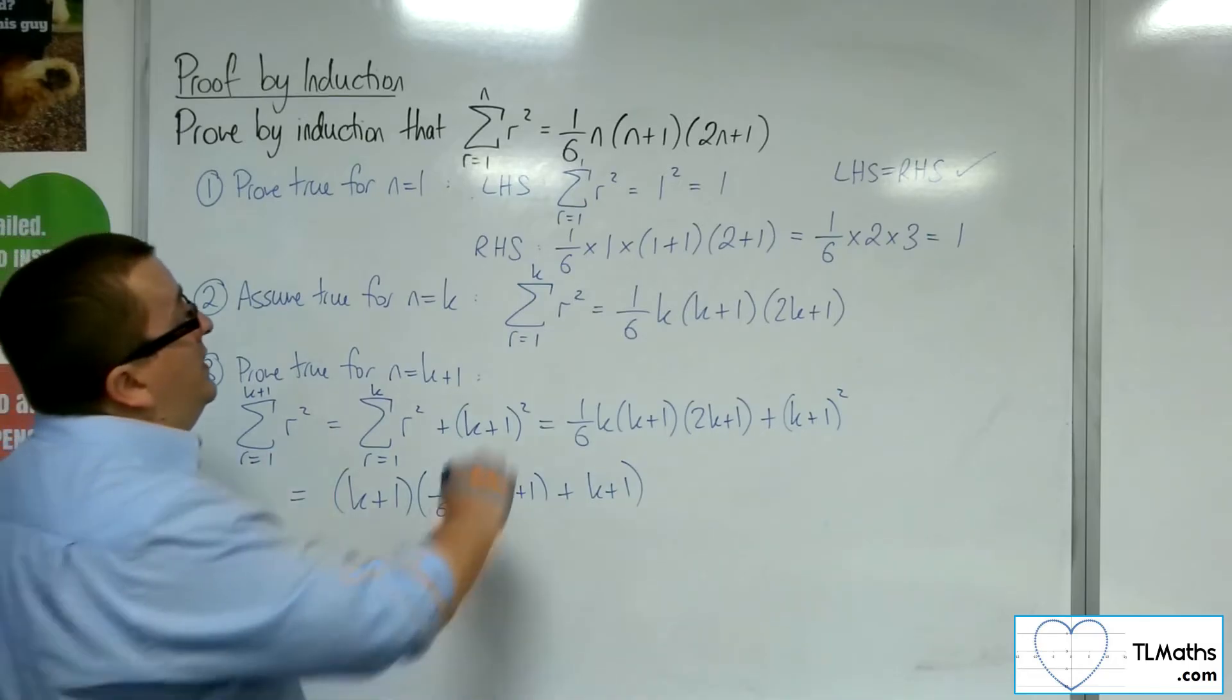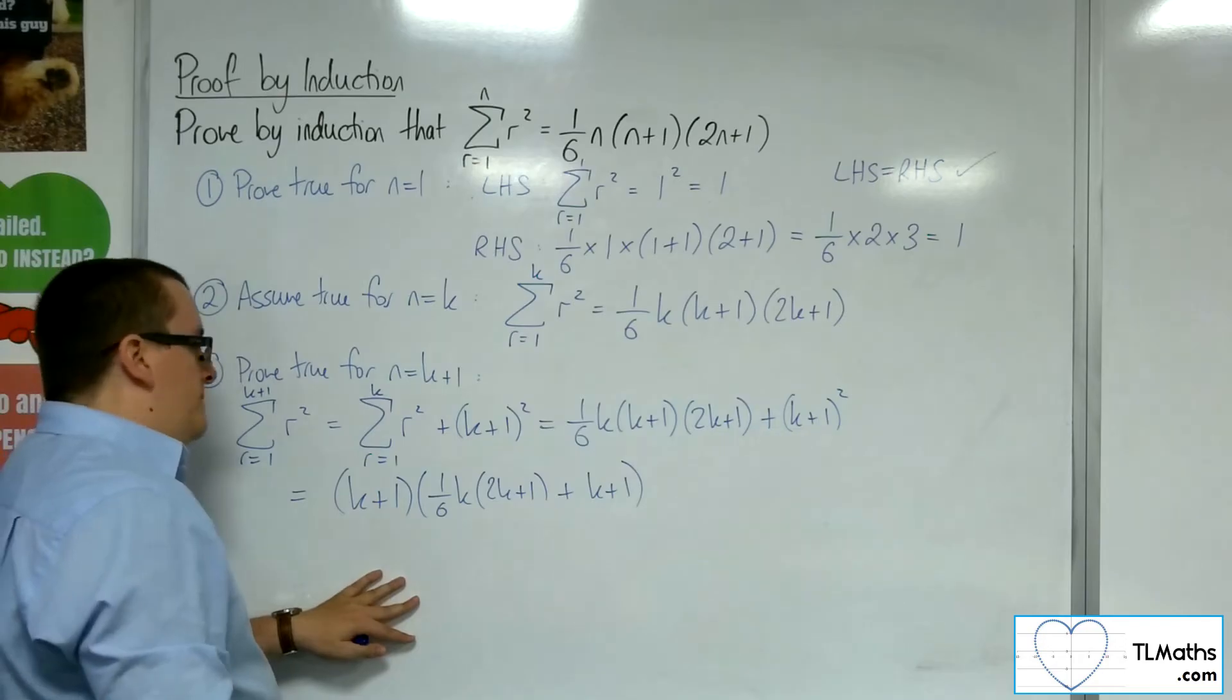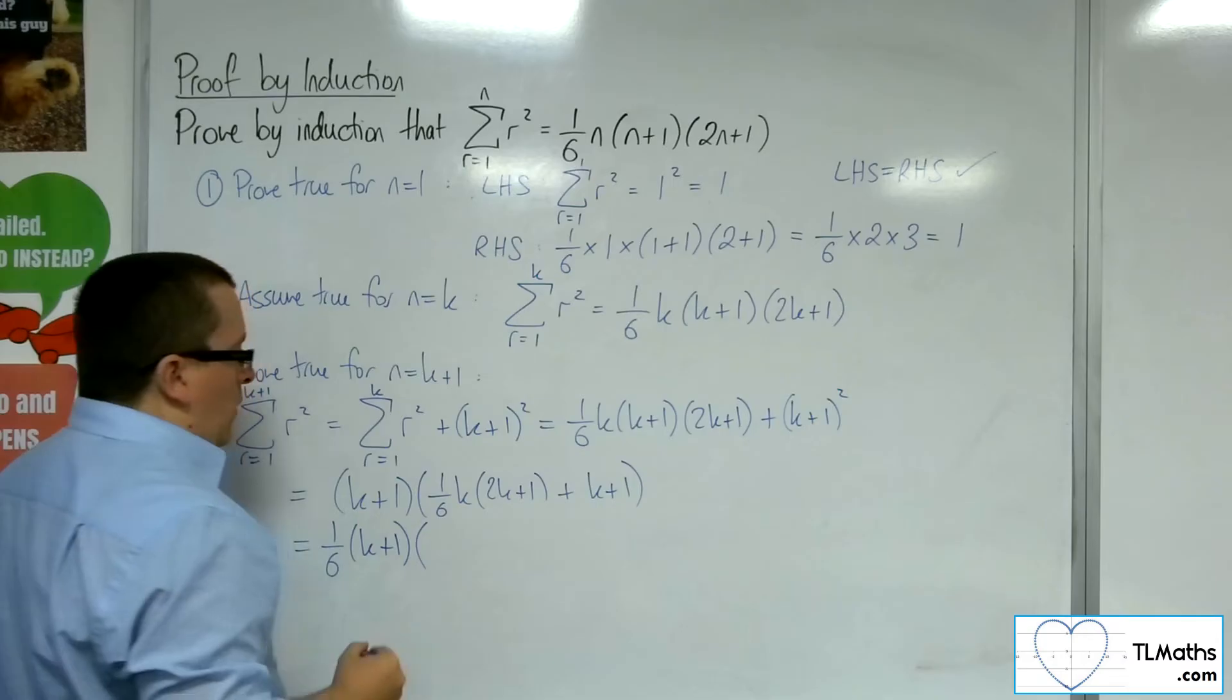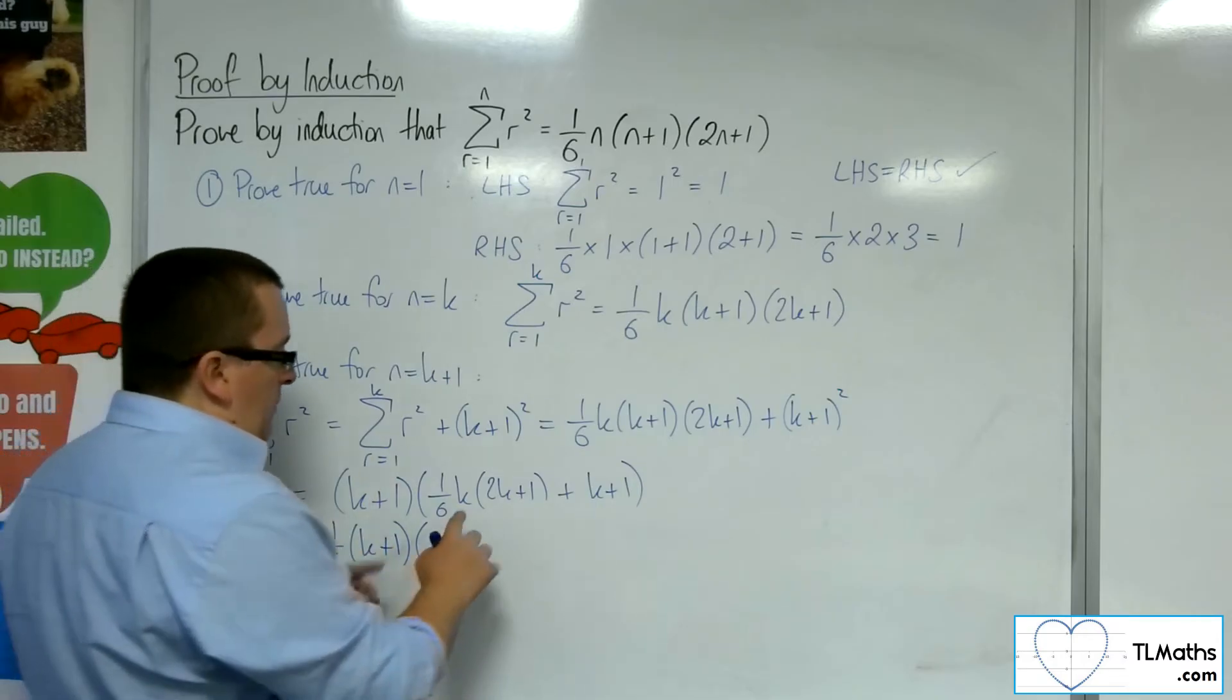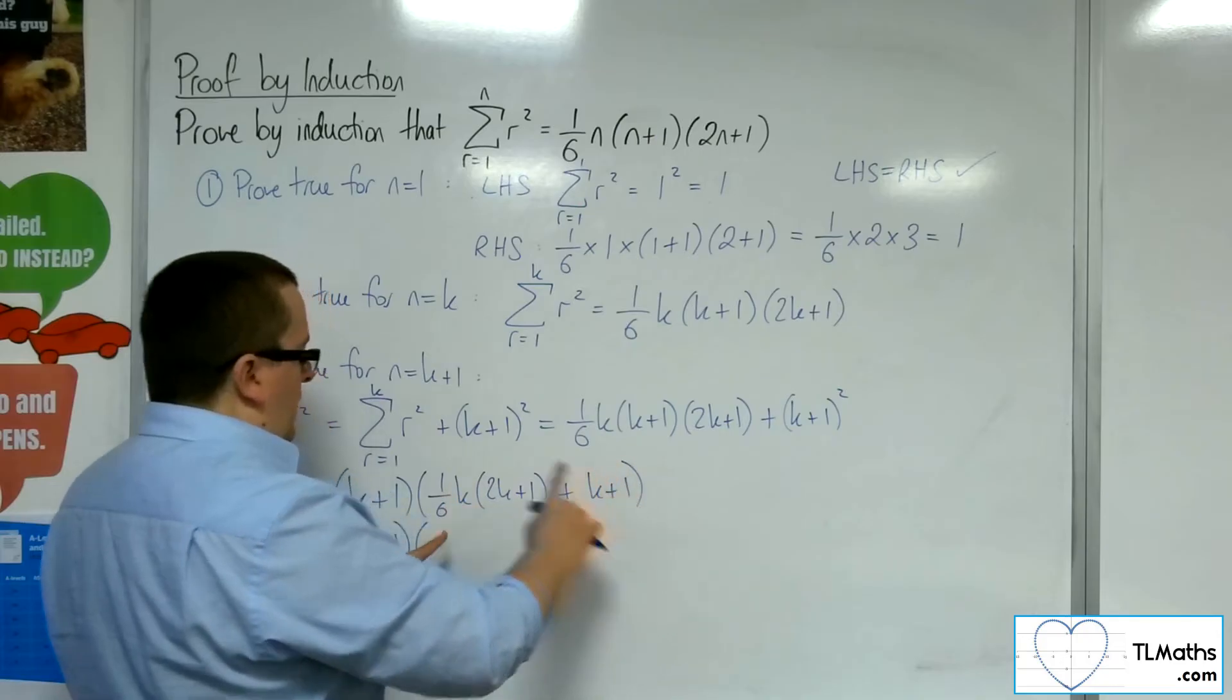Now, the thing is, I know that I want to get that 1/6 as well. I want that 1/6 to be out the front. So, in order to bring the 1/6 out, what I'm going to have to do is I'm going to have to multiply everything inside this bracket by 6.